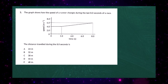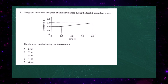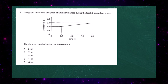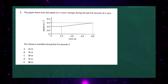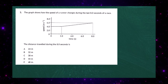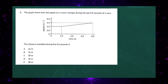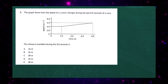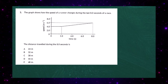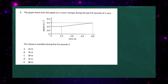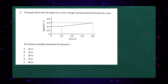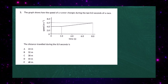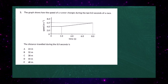Question three. The graph shows how the speed of a runner changes during the last eight seconds of a race. We're asked to find the distance traveled over eight seconds. With a speed-time graph, it's the area under the graph that gives you the distance. You need to split the graph into rectangles and triangles.